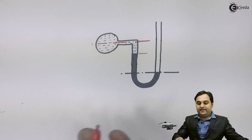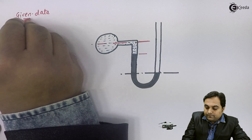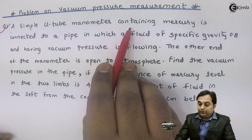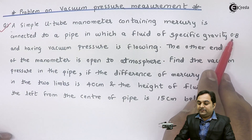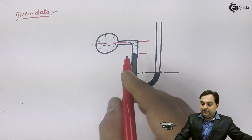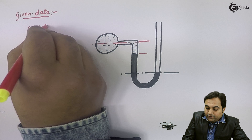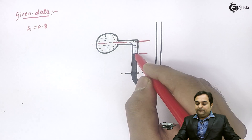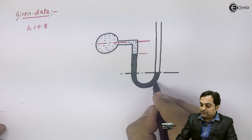Reading the question: a simple U-tube manometer containing mercury is connected to a pipe in which fluid of specific gravity 0.8 and having vacuum pressure is flowing. The specific gravity of the fluid, denoted s1, is equal to 0.8. The heavier liquid is mercury, shown in black here.